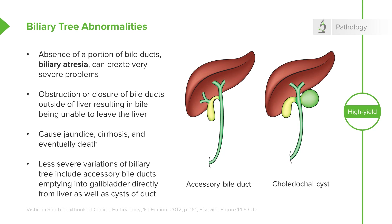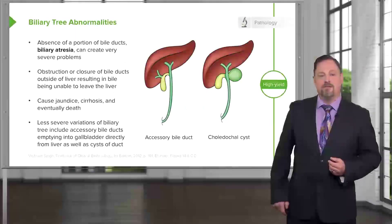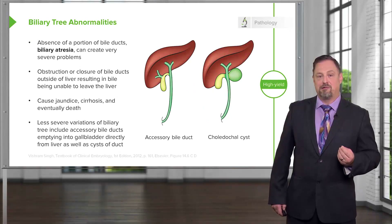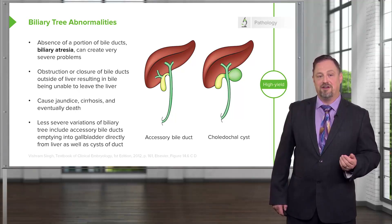Less severe are aberrations in the biliary tree that still allow drainage into the intestine. An accessory bile duct that enters the gallbladder directly must be accounted for during gallbladder removal. A choledochal cyst can occur when part of the biliary tree balloons outward. These must be accounted for and can cause problems, but are not as severe as conditions causing jaundice, cirrhosis, and death due to bile backup.